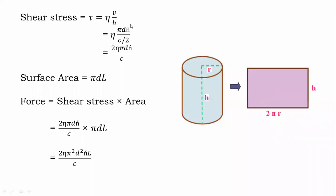First step is to calculate the shear stress. We know the shear stress–viscosity relation: shear stress τ = η × (v/h). Here velocity v = π·d·N', and h = c/2. Substituting h, we send the 2 to the numerator, giving τ = 2·η·π·d·N' / c.